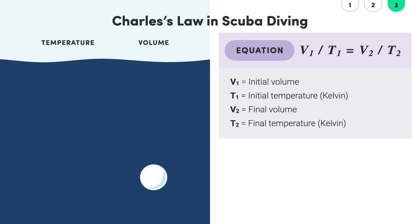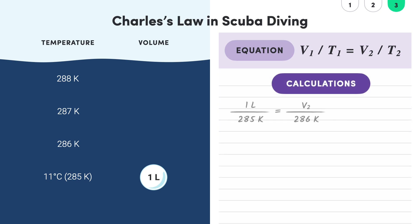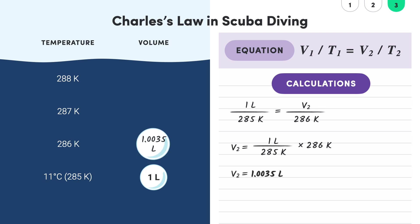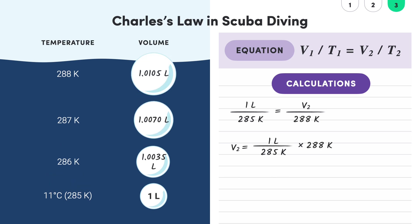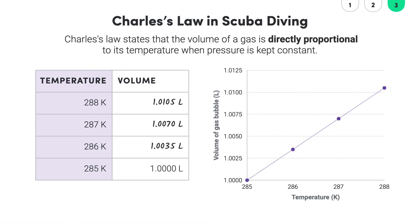Now let's assume that the initial temperature of the gas when the bubble is released is about 11 degrees Celsius, or 285 Kelvin, and the volume of a bubble at this temperature is 1 liter. Using Charles's Law, we can calculate the volumes at the other temperatures. We need to rearrange to get V2 by itself. So at 286 Kelvin: 1 liter over 285 K multiplied by 286 Kelvin gives us 1.0035 liters. We can do the same calculation at 287 Kelvin and 288 Kelvin, which gives us volumes of 1.0070 liters and 1.0105 liters. By plotting these values on a graph, we see a directly proportional relationship, showing us that as the temperature increases, the volume of our bubbles also increases.